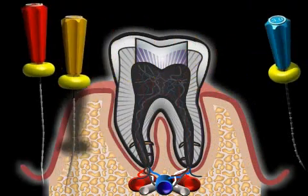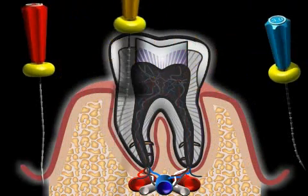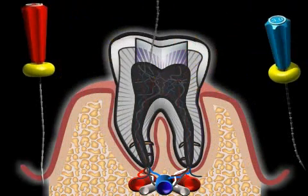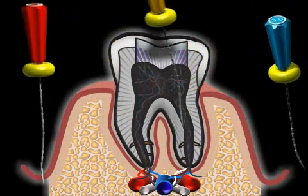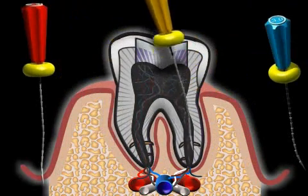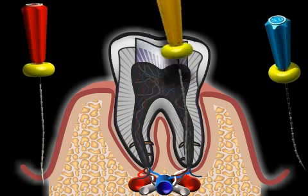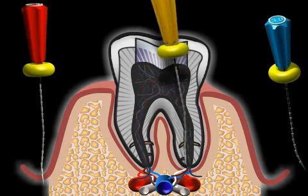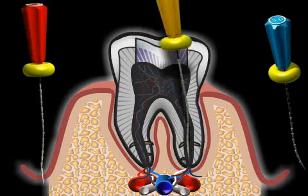First, the tooth is drilled open. Then the canals are reconditioned in a conical fashion with the root canal instruments and are well rinsed again and again.